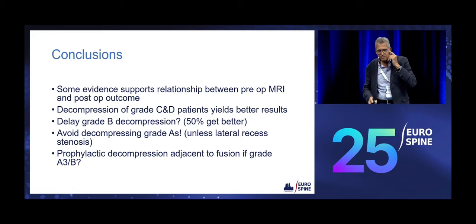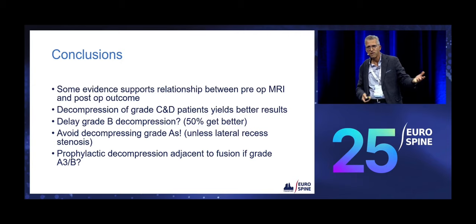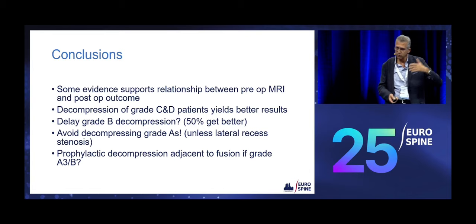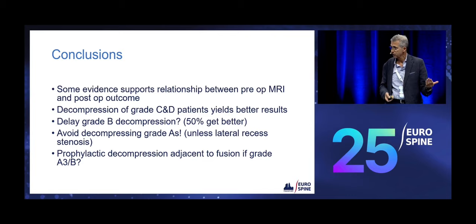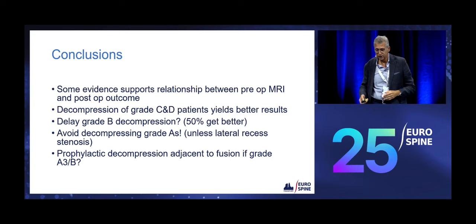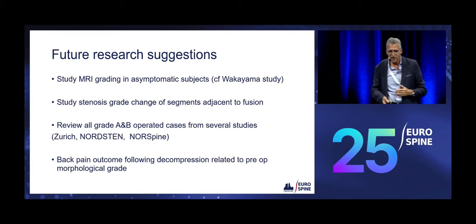In conclusion, there is some evidence to support a relation between MRI grading and post-op outcome. Decompression of C and D grades yields better results than A's and B's. Should we delay Grade B decompression? As we saw from the Zurich paper, the more pain you have, the more you benefit from surgery — maybe we should let those patients mature and operate when they become Grade C. One should avoid decompressing Grade A's, unless there is lateral or foraminal stenosis. And whether we should prophylactically decompress other levels, we don't know yet.